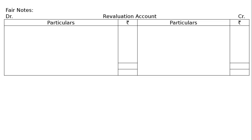Now the revaluation account. Draw the proper format. First item: to stock Rs.1600. A part of the stock included at cost of Rs.2000 had been badly damaged in storage and could only be expected to realize Rs.400, so decrease in stock is Rs.1600. Next: to bank charges Rs.200, as already explained — an expenditure left out of consideration.